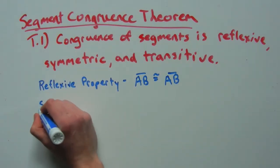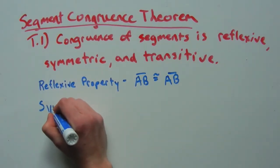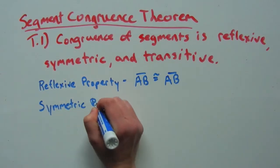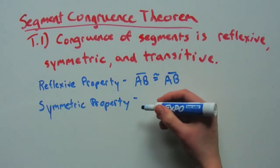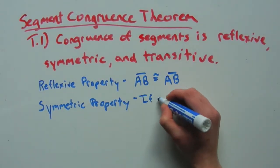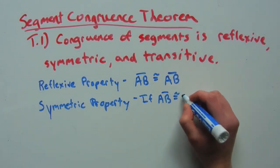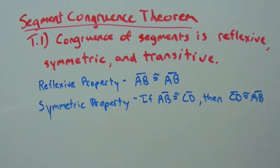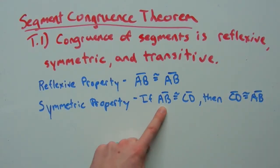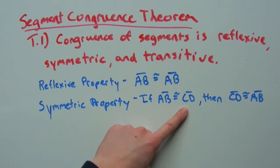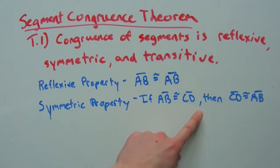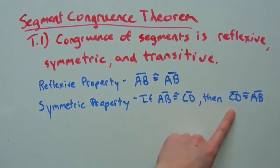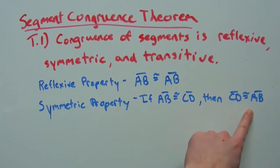The symmetric property when dealing with congruence says that if segment AB is congruent to segment CD, then segment CD is congruent to segment AB.